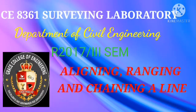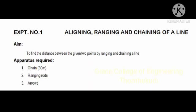Experiment Number 1: Aligning, Ranging and Chaining of a Line. The aim is to find the distance between two points by ranging and chaining a line.